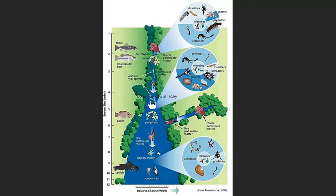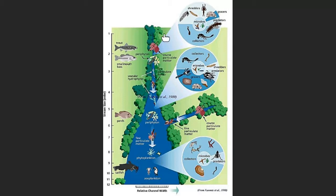For first, second, and third order streams — and sometimes even fourth — the stream channel width is small enough that the canopy can cover 90% or more of the channel. But once you get beyond third or fourth order streams, the channel becomes so wide that the canopy can no longer cover everything. This matters because sunlight provides the vast majority of energy to ecosystems, and in streams, energy comes from allochthonous material falling into the stream.